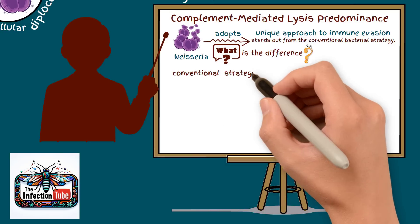Typically in the conventional strategy, bacteria aim to evade phagocytosis, a process where they are engulfed and digested by immune cells.